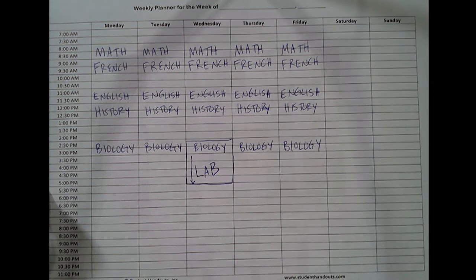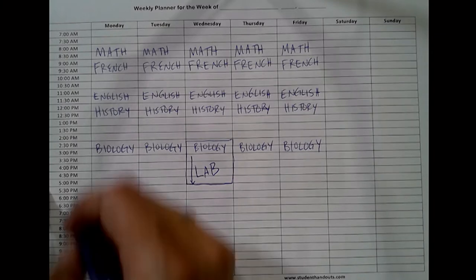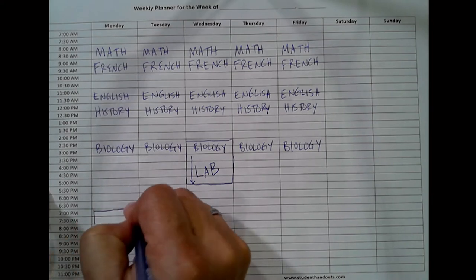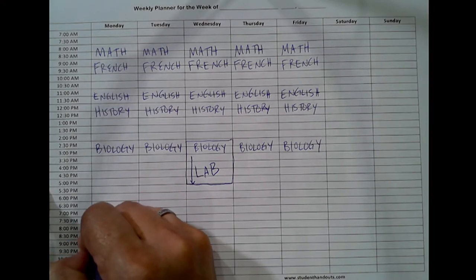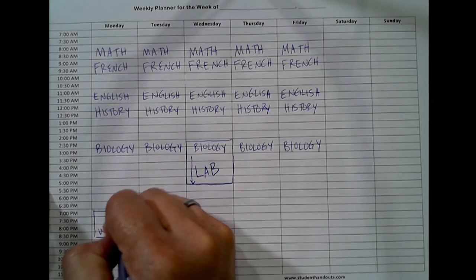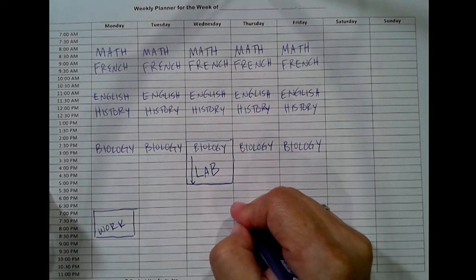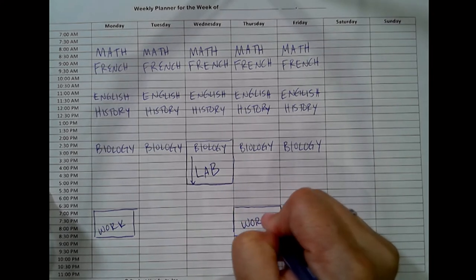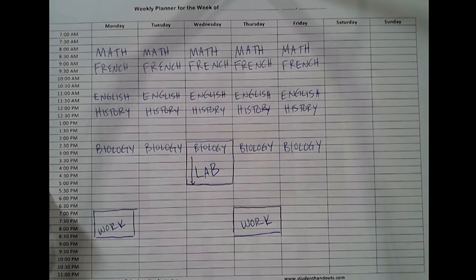Once you have all of your classes written into your calendar — the times you're physically present — you want to add in other immovable commitments. You might have a work-study job, for example, where you need to be at the front desk from 7 to 9 on Monday and also from 7 to 9 on Thursday.